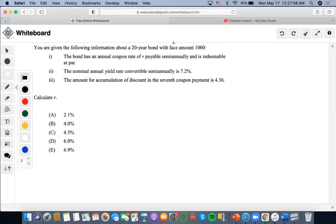Okay, so for this one it says that you are given the following information about a 20-year bond with a $1,000 face amount. The bond has an annual coupon rate of R, payable semi-annually, and is redeemable at par.